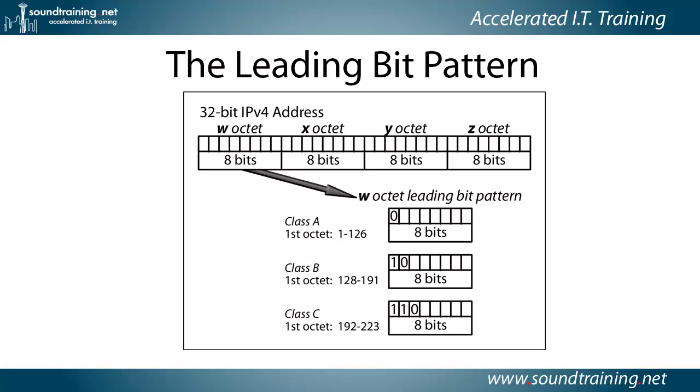You may also wonder where those first octet values come from — it's from the leading bit pattern. A class A address always has a leading bit of 0, so the leftmost bit is always 0. Therefore, the first octet falls within the range of 0 to 127 inclusive, and because of internet rules, we limit it to 1 to 126.